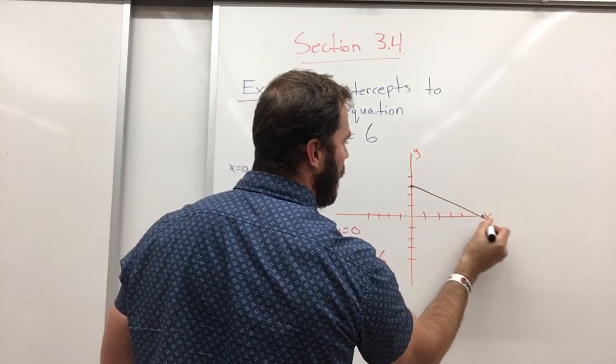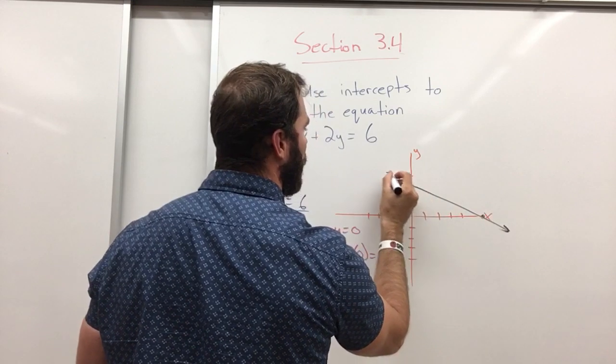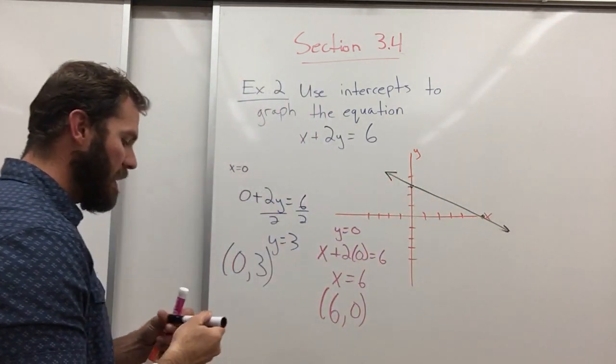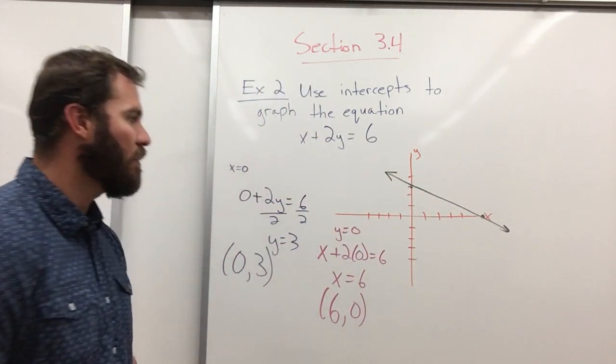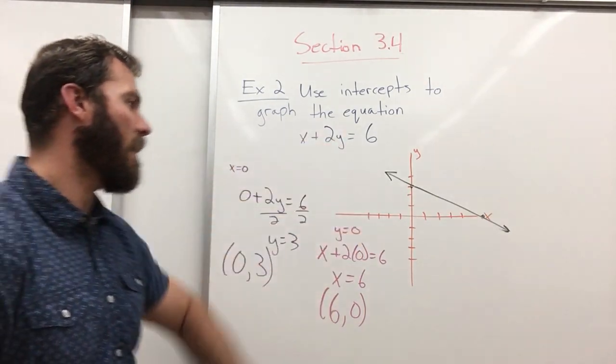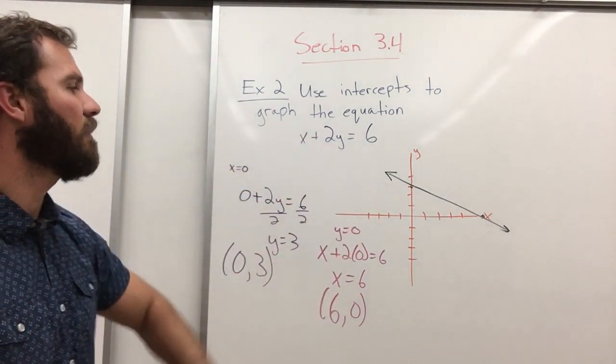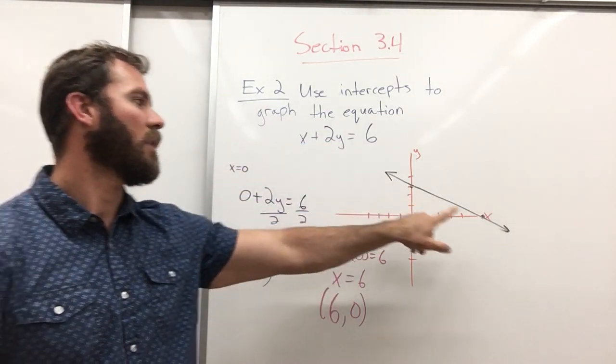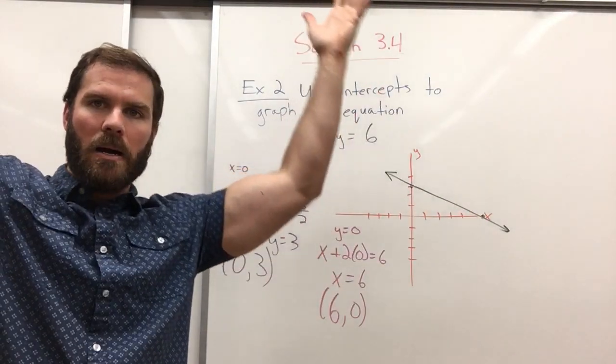So now I have a line. I graphed it, easy as pi. All I had to do was make x zero, solve for y. Then I made y zero, solve for x, get my two points where they cross the intercepts, done.